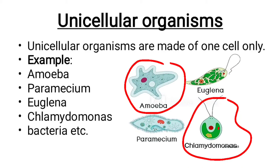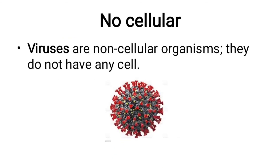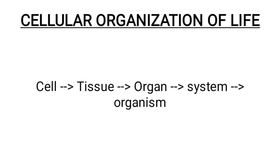Cells perform functions such as movement, digestion, and excretion. A unicellular organism is made of one cell, a multicellular organism — such as hydra or plants — is made of many cells. Noncellular organisms are viruses. For example, coronavirus is a virus. Viruses are noncellular — they do not have any cells.